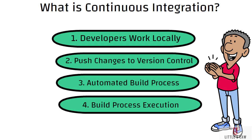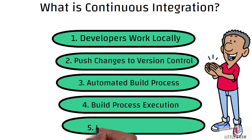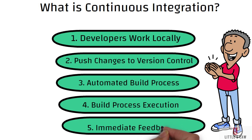The final step is immediate feedback on the build status. If any issues are detected during the build process — such as failing tests, compilation errors, or violations of coding standards — the CI server notifies developers immediately. Notifications can be sent via email or messaging platforms, or integrated directly into development tools like an IDE. Developers receive the status of their build in real time, allowing them to address any problems promptly.